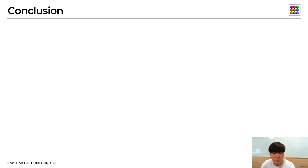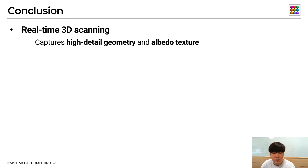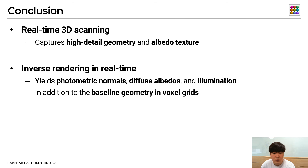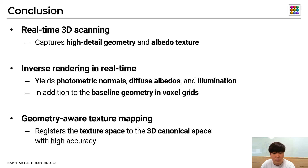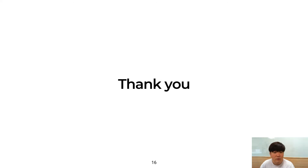In conclusion, we have presented a real-time 3D scanning method that captures high-detail geometry and albedo texture. Our algorithm solves the inverse rendering problem in real-time, yielding photometric normals, diffuse albedos, and illumination in addition to the baseline geometry. We propose a geometry-aware texture mapping that registers the texture space to the 3D canonical space with higher accuracy. Thank you for your attention.